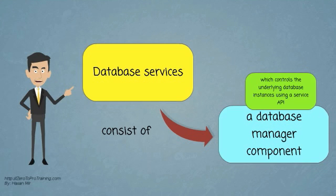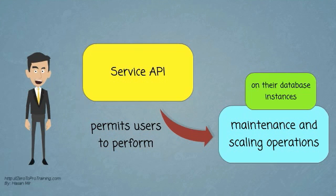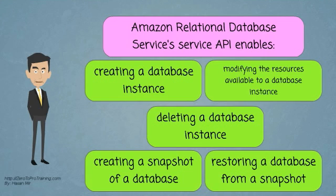Database services consist of a database manager component which controls the underlying database instances using a service API. The service API is exposed to the end user and permits users to perform maintenance and scaling operations on their database instances. For example, the Amazon Relational Database Services service API enables creating a database instance, modifying the resources available to a database instance, deleting a database instance, creating a snapshot of a database, and restoring a database from a snapshot.